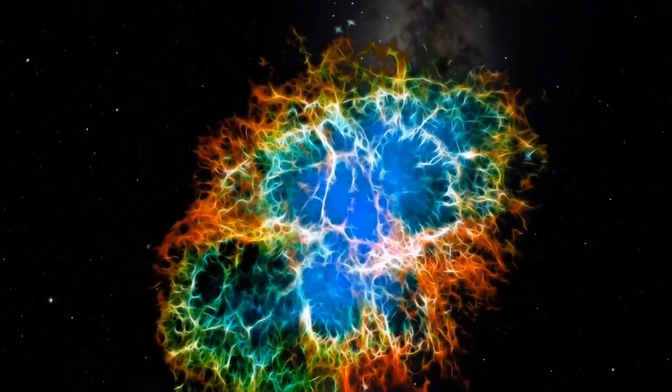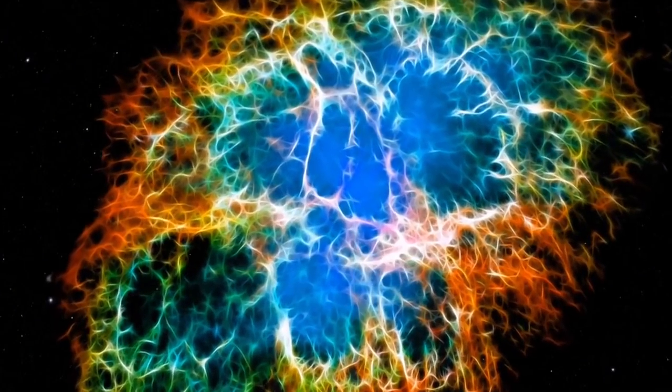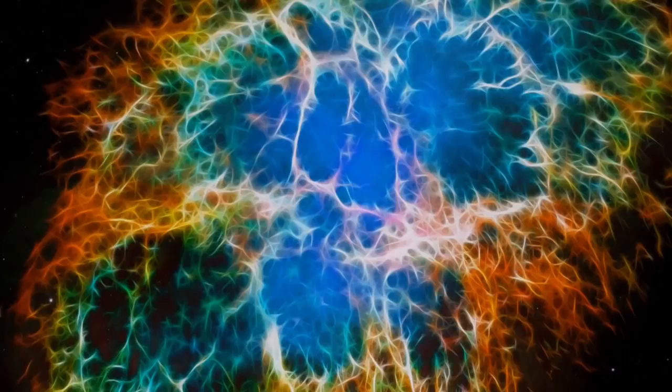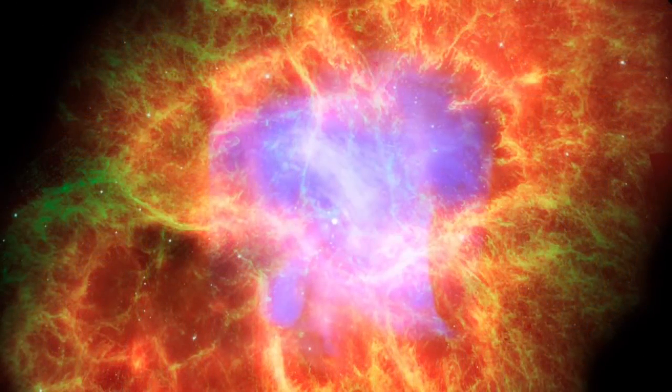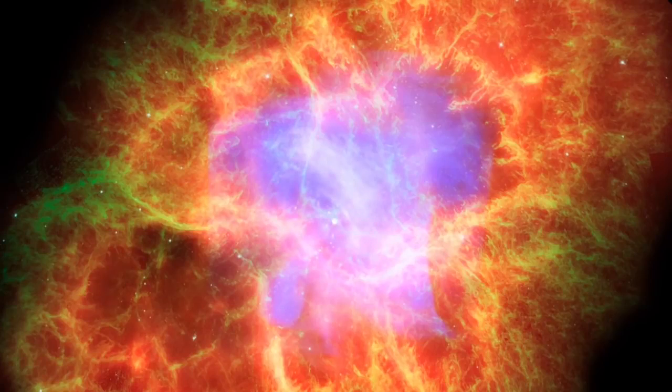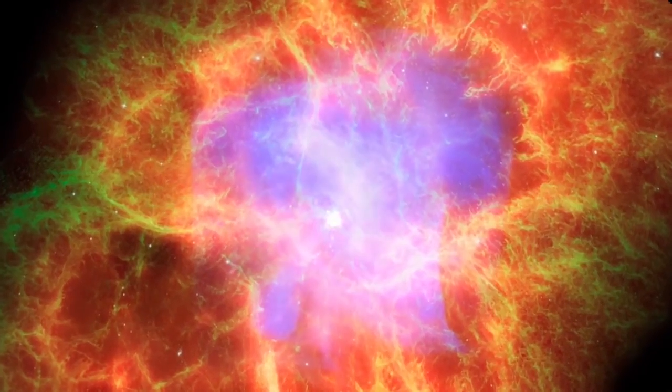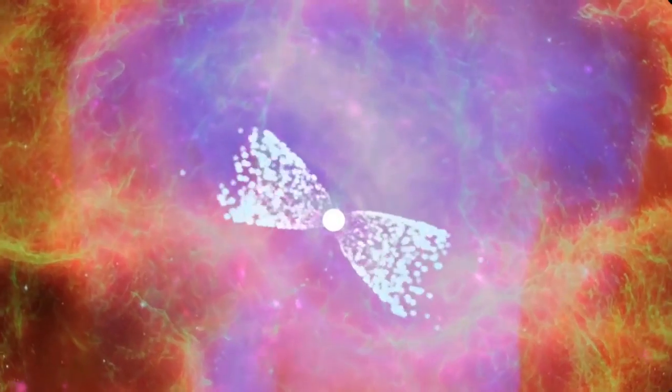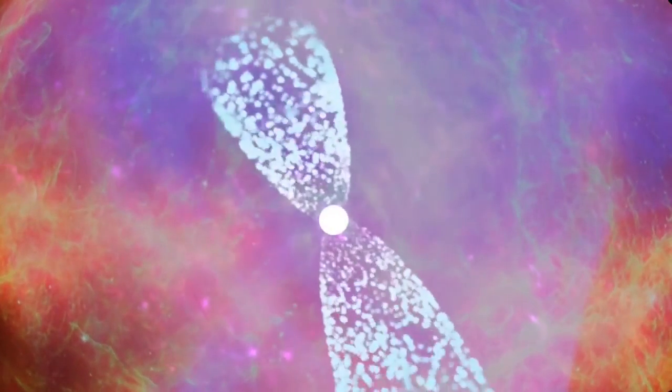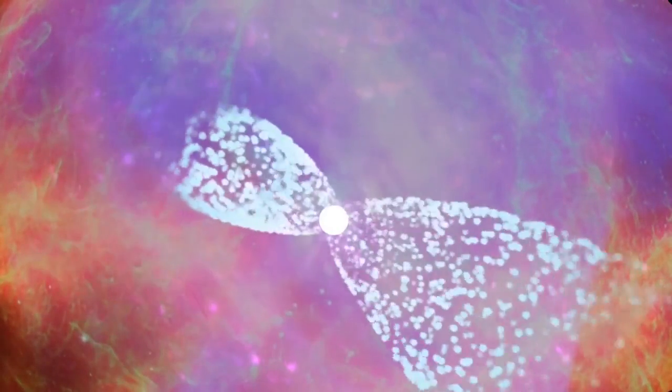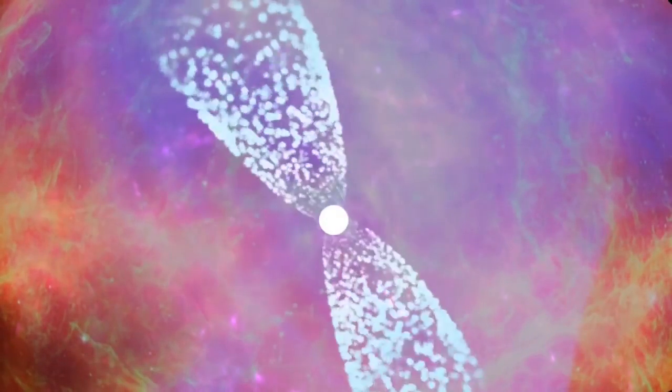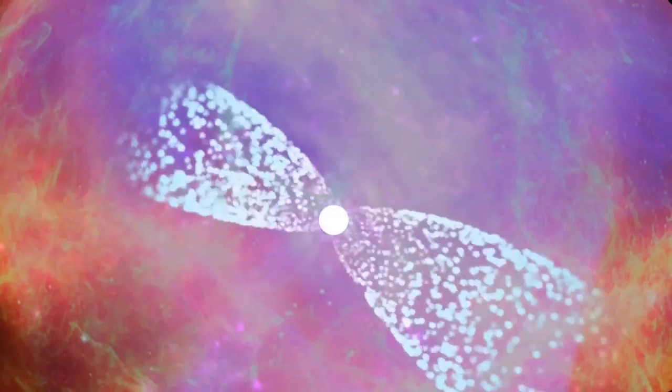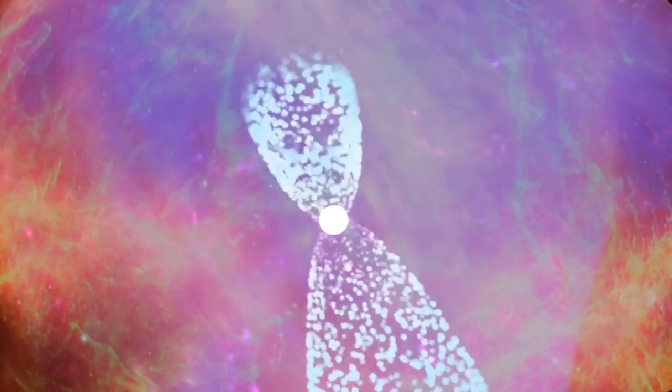The Crab Nebula is the remnant of a supernova explosion that humans saw almost a thousand years ago. Deep inside the nebula lies the star's rapidly spinning imploded core. Here an intense magnetic field focuses radiation at the star's magnetic poles, producing a beam of radiation sweeping across space like a lighthouse beacon. Here the star's magnetic field contains and directs the flow of charged matter.